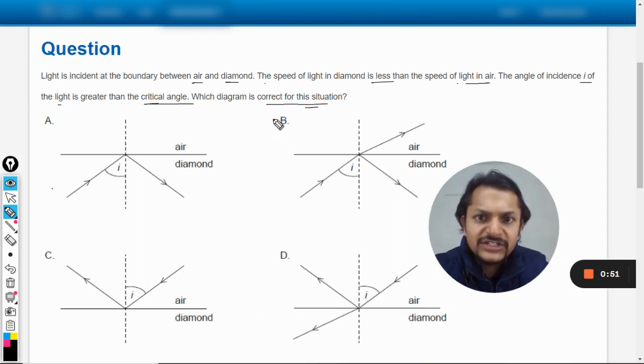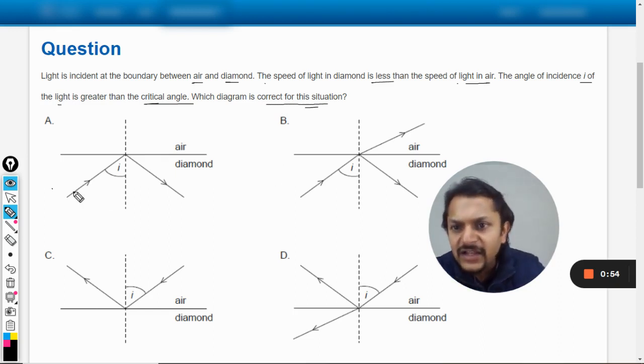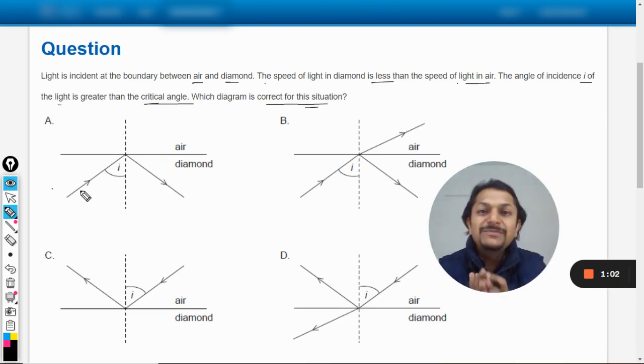So my students, if I say that the light is coming from the denser medium, that is from diamond, and it is trying to go into air, that is rarer medium, it becomes the most suitable case for TIR, total internal reflection. And at that time if the angle of incidence is greater than theta critical, reflection will take place.